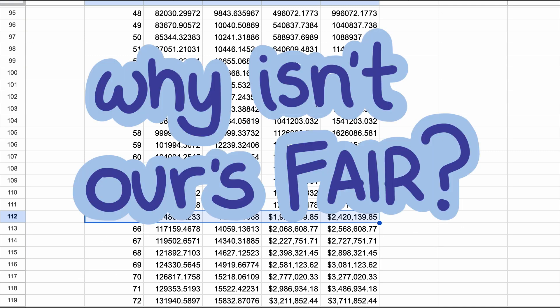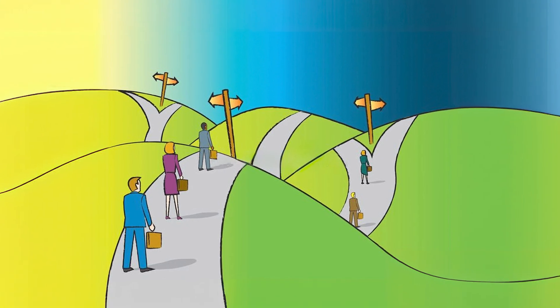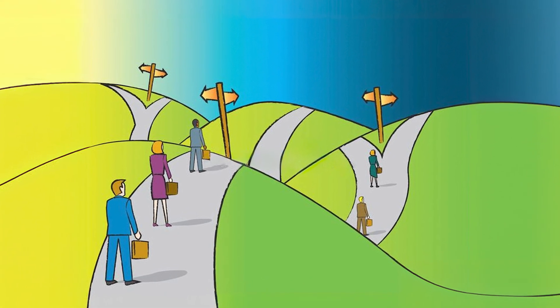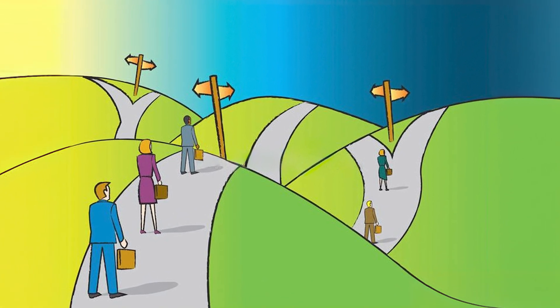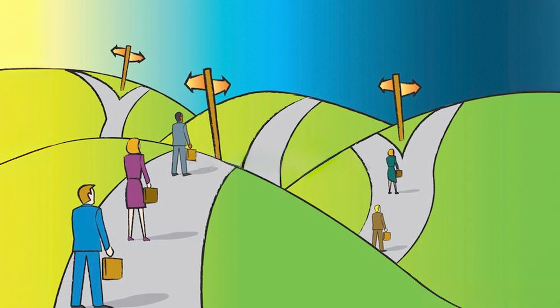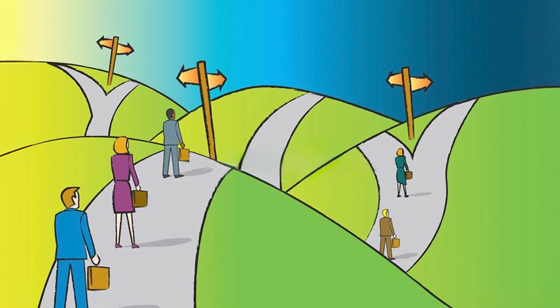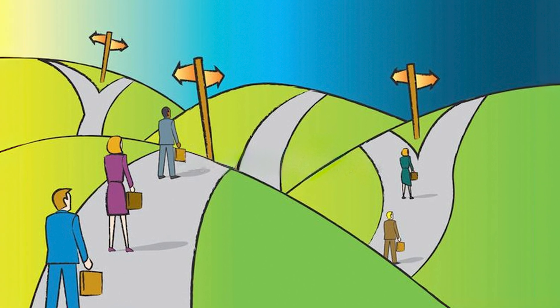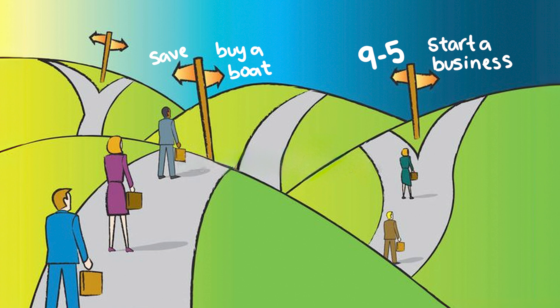So why don't we have such a fair wealth distribution? Well, one reason is that people make different choices with their life and money. Some reasonable variations about what people do with their money is all that is needed to get our current wealth inequality, and I'll show you how.